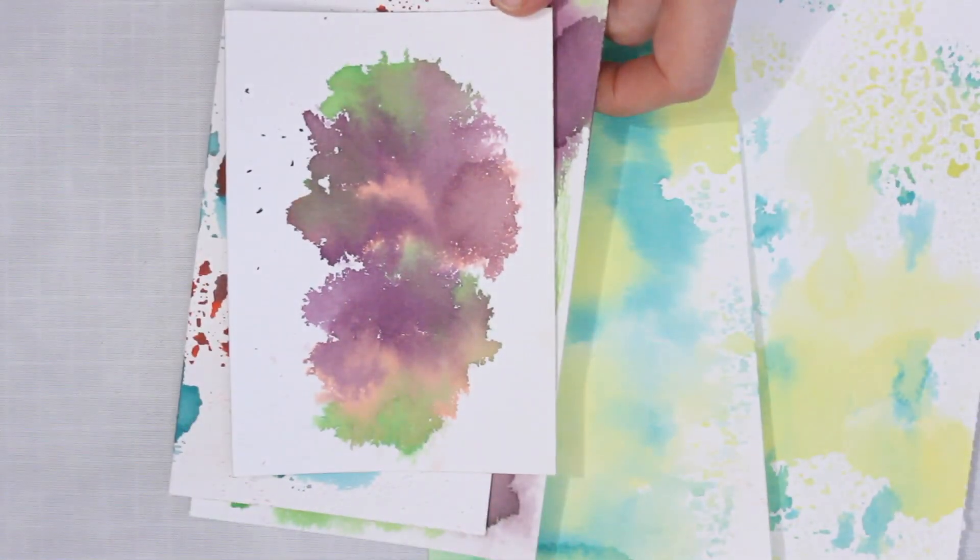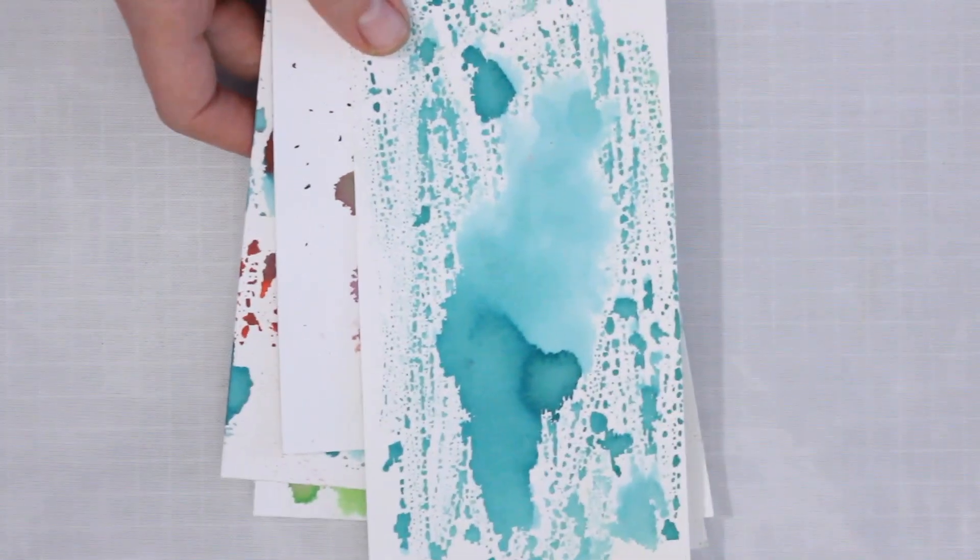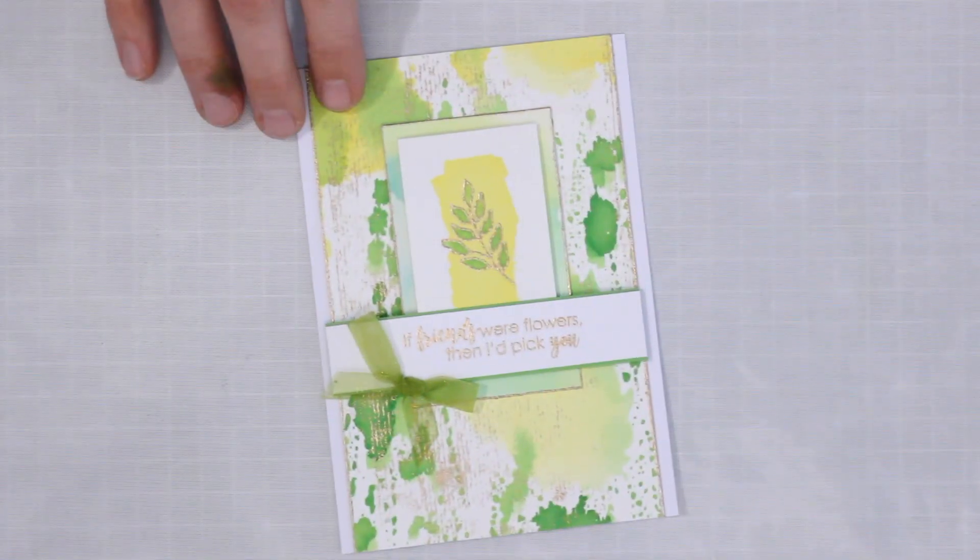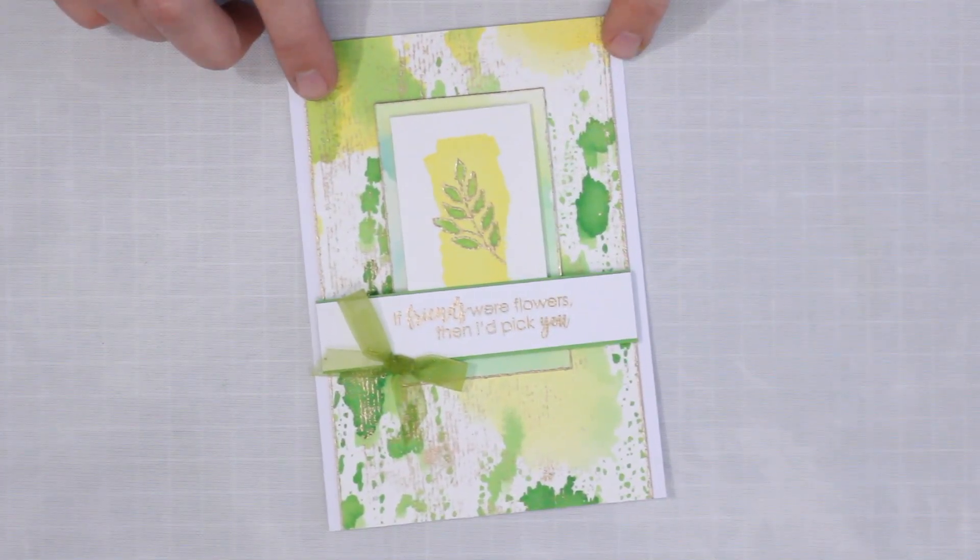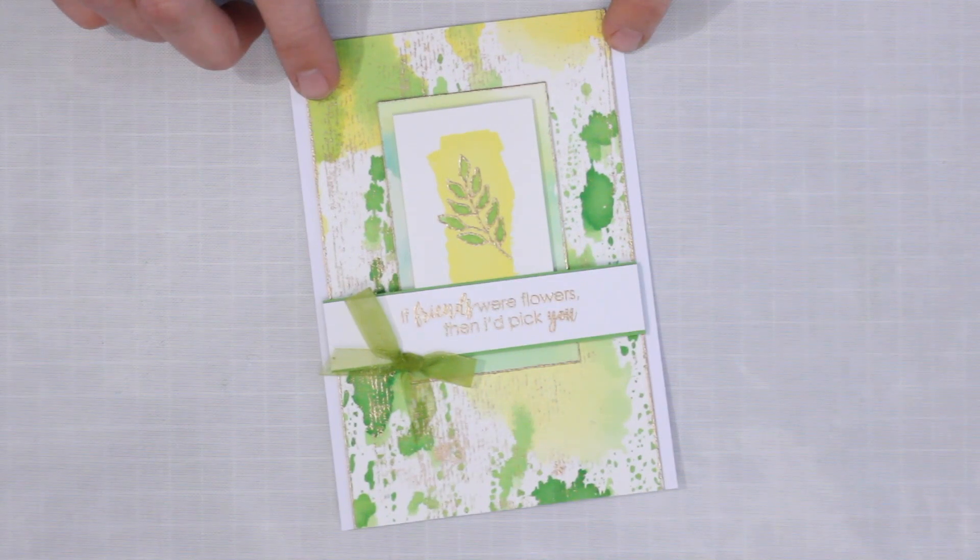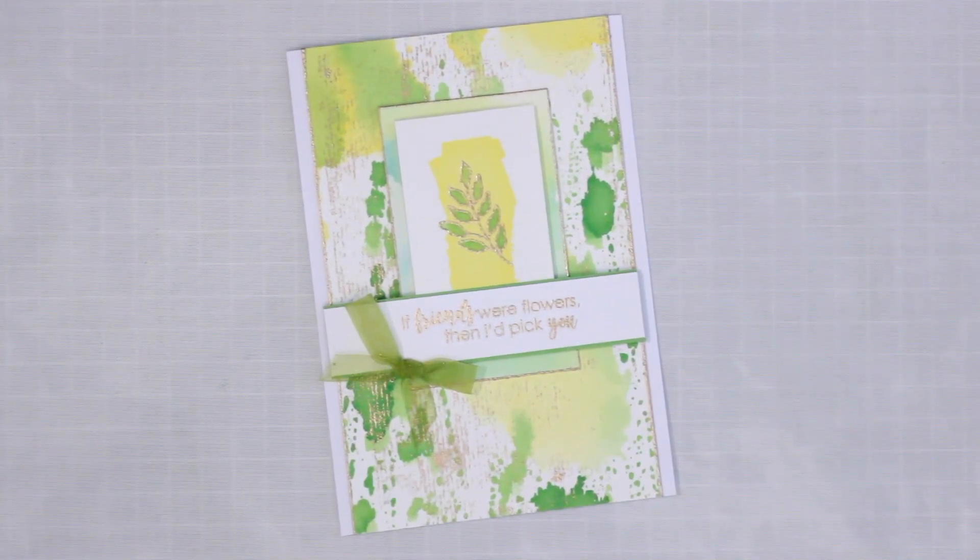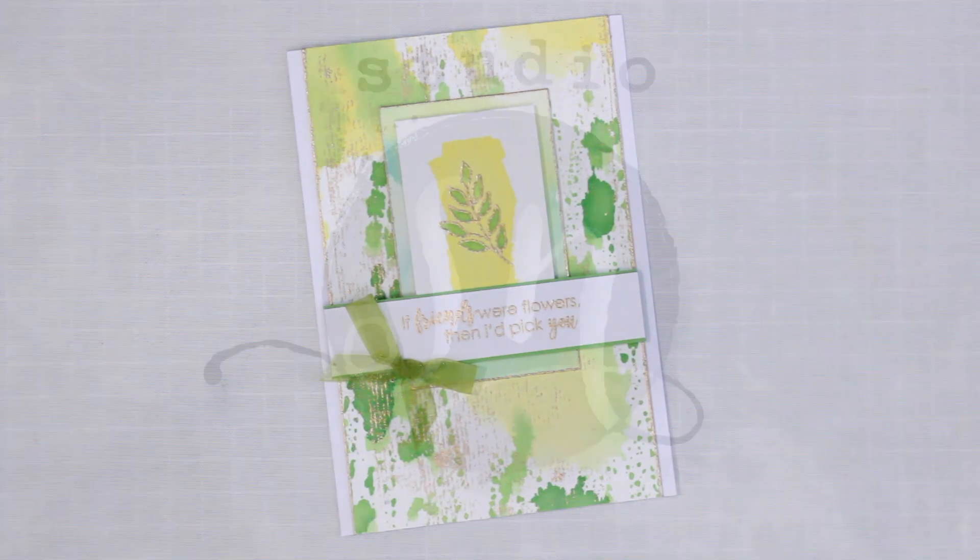You can go all the way to the edges of the cardstock or keep things in the center. You can go with a combination of colors or you could even go with just a single color. So lots of different effects that you can get. They'll all depend on the amount of paint that you're working with and the amount of pressure and how much you are going back and dipping into those puddles of paint on your craft sheet. So this is how you can create a simple pressed background using your watercolors and some embossing powder.